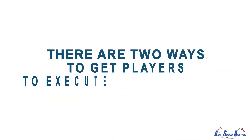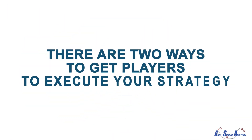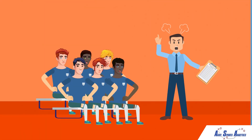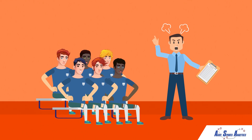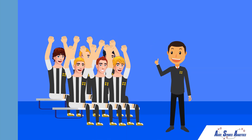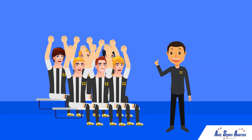There are two ways to get players to execute your strategy. The coach for Team A yells at his players, while the coach for Team B knows players are in sync with his game plan.